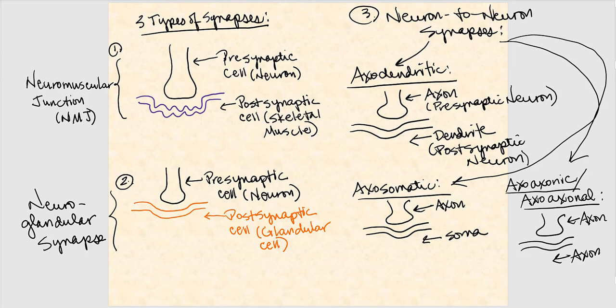The second type of synapse is when the presynaptic cell, which is a neuron, communicates with a postsynaptic cell that is a glandular cell. This type of synapse is referred to as a neuroglandular synapse — so it's a neuron communicating or synapsing with a glandular cell. That's synapse number two.